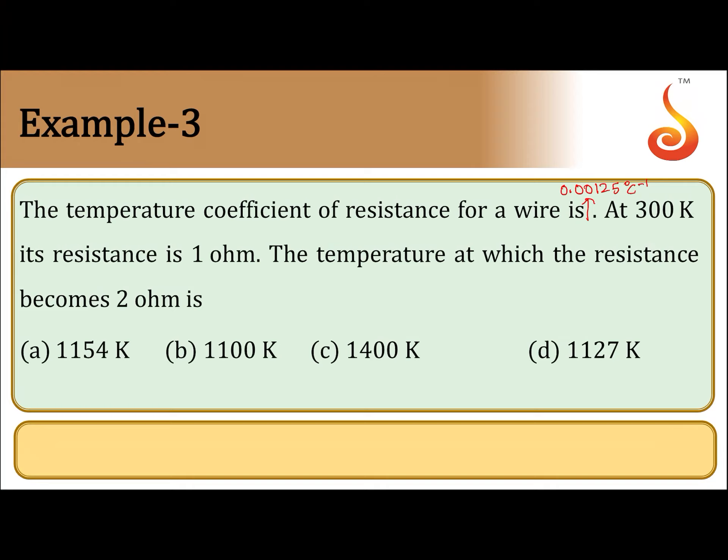Notice one thing, here they have given temperature in 300 Kelvin. So they have given it in Kelvin. We have formula for degree Celsius temperatures. So first let us convert these things to degree Celsius, we will get the answer in degree Celsius, then we can convert it back to Kelvin. That is safer.